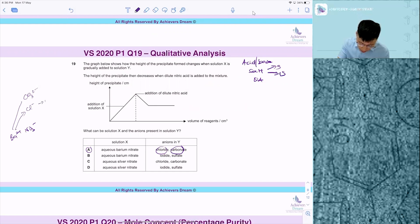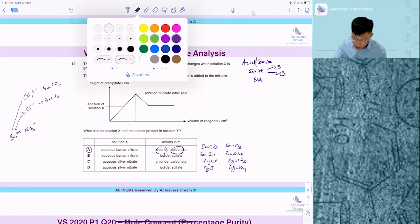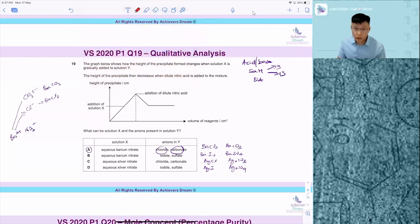So you will get BaCl2 and BaCO3. So very quickly, I'm going to write down BaCl2, BaCO3, BaI2, BaSO4, AgCl, Ag2CO3, AgI, Ag2SO4. For this, you can write down all this. Then the next part is this: you list down what is soluble and what is not soluble.